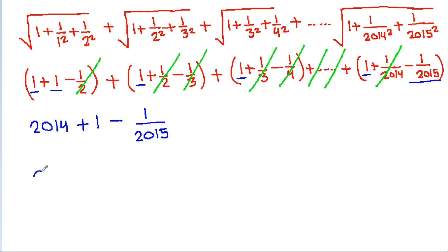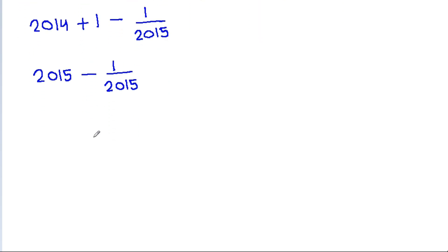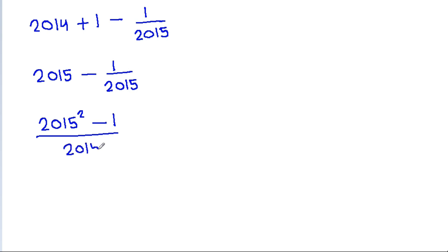What remains is 2014 plus 1 minus 1 by 2015, which equals 2015 minus 1 by 2015.